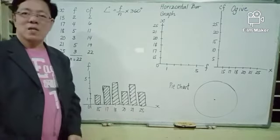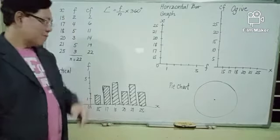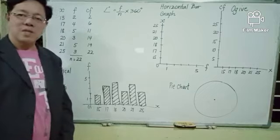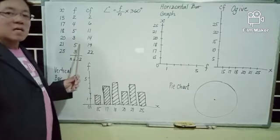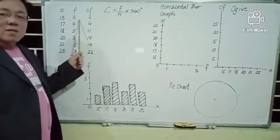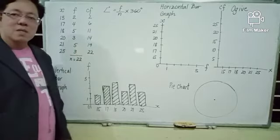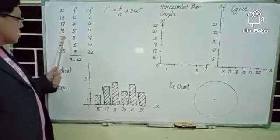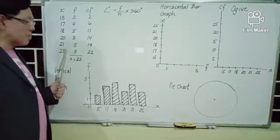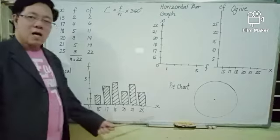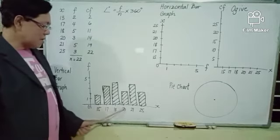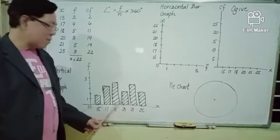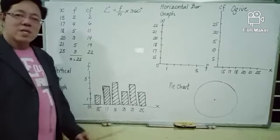When constructing a vertical bar graph, write the frequency in the vertical axis and select the appropriate interval scale depending on the lowest and highest frequencies. For this example, the lowest is 2 and the highest is 5, so I use a 1-unit interval. Write the scores in order as they appear in the frequency table in the horizontal axis, equally spaced. The rectangles should also be equally spaced with equal spaces between vertical bars.